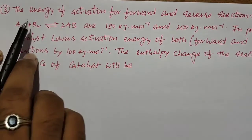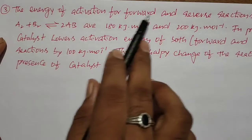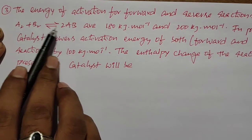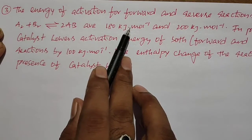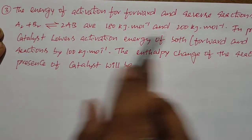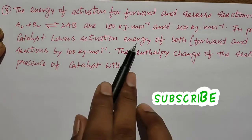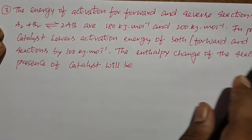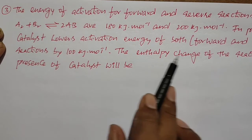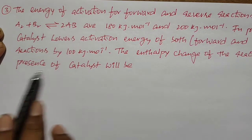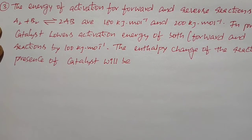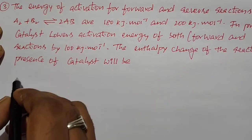This is the next problem. The energy of activation for forward and reverse reactions for A₂ + B₂ → 2AB are 180 kilojoules per mole and 200 kilojoules per mole. A catalyst lowers the activation energy of both forward and backward reactions by 100 kilojoules per mole. The enthalpy change of the reaction in terms of the catalyst will be?